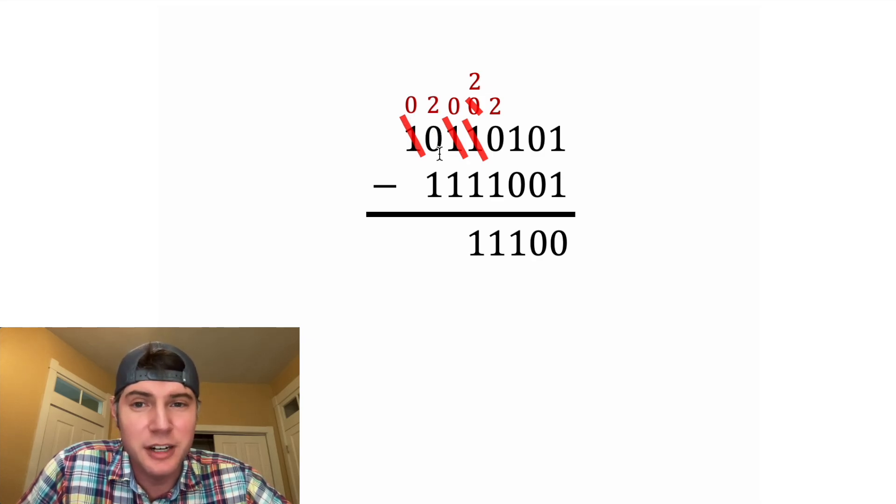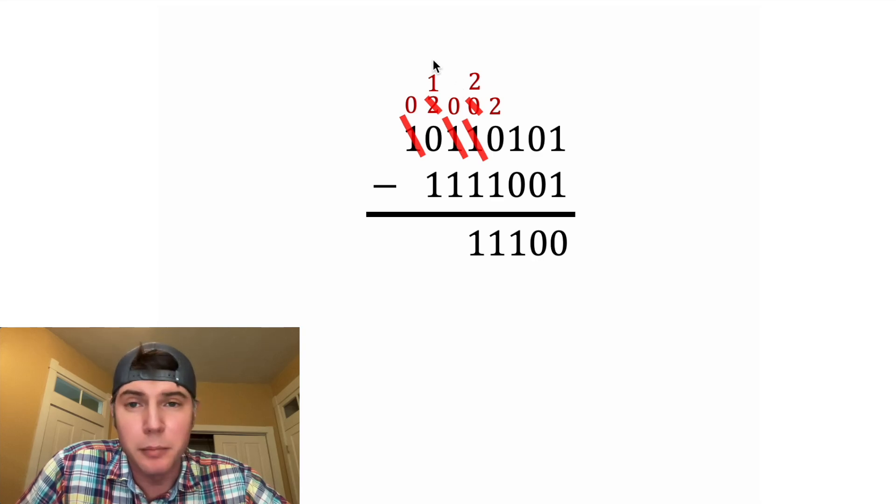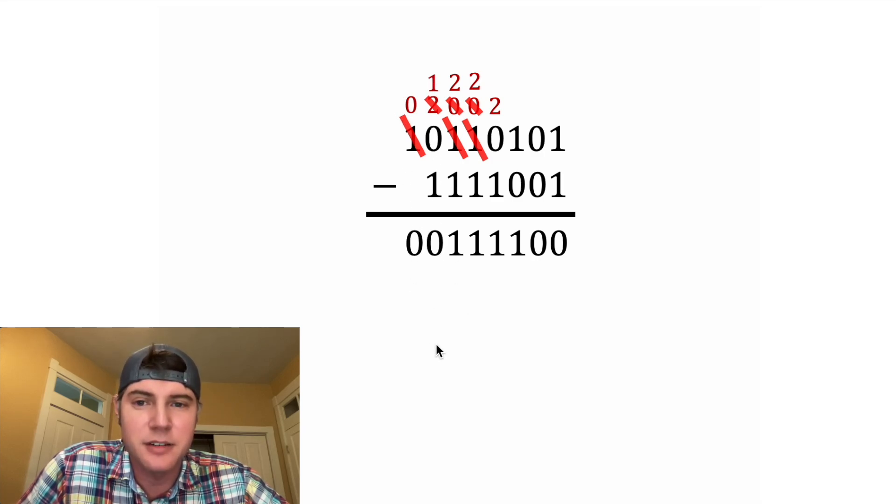So that gives us a 2 here, so we're going to make this 2 a 1, so we can move 1 over here, but a 1 in this column is equal to a 2 in this column, and 2 minus 1 is equal to 1, and then 1 minus 1 is 0, and then 0 minus 0 is 0.